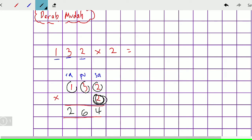Kita mendarab mengikut nilai tempat yang ada. Jadi jawapan bagi soalan ini adalah sama dengan 264.